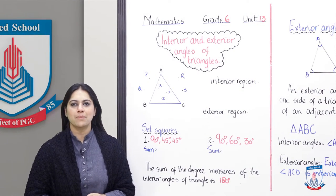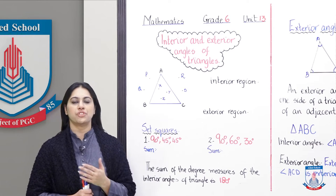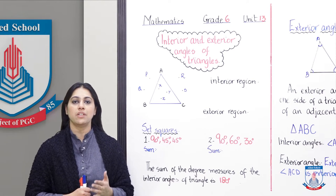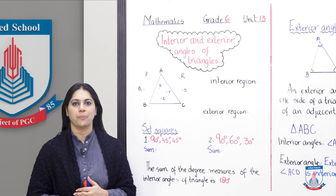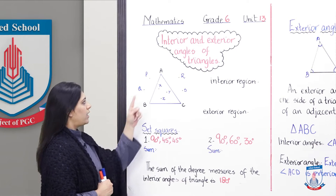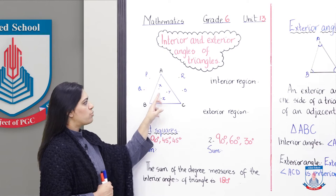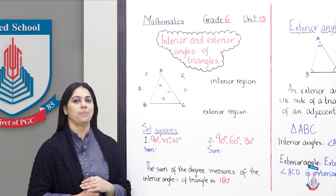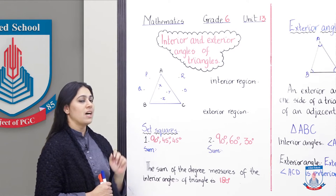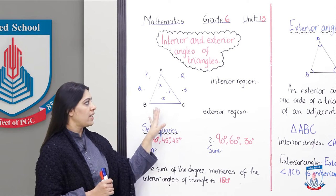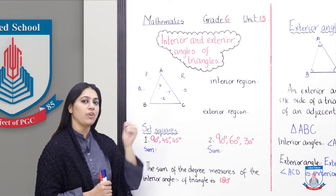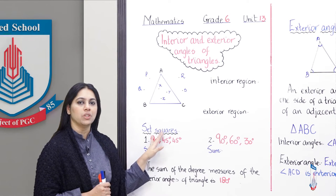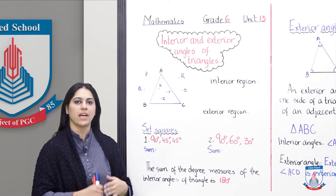Today we will discuss interior and exterior angles of triangles. We are going to understand interior and exterior regions of triangles. We have a triangle drawn A, B, C. There are some points inside it and outside. We call the area inside the triangle the interior region, and the points lying outside are on the exterior region of the triangle.